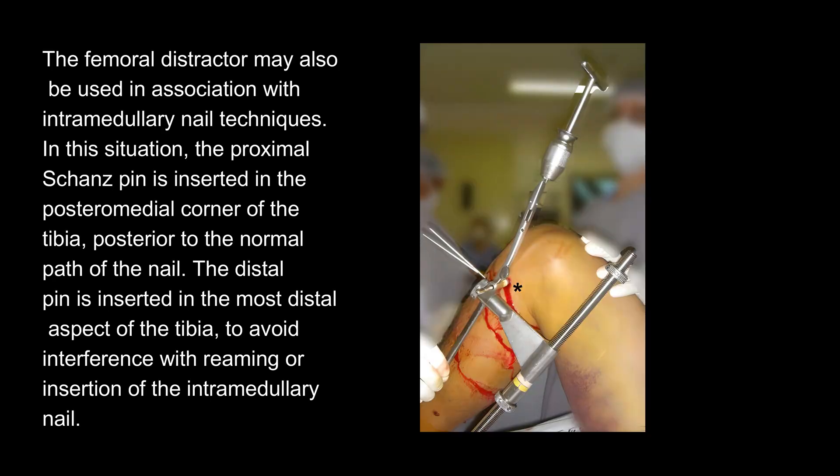The femoral distractor may also be used in association with intramedullary nail techniques. In this situation, the proximal Schanz pin is inserted in the posteromedial corner of the tibia, posterior to the normal path of the nail. The distal pin is inserted in the most distal aspect of the tibia, to avoid interference with reaming or insertion of the intramedullary nail.